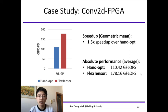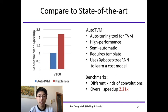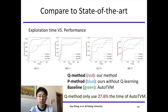We also compare to the state-of-the-art. We use AutoTVM as baseline, which requires users to write high-quality schedule templates and perform parameter tuning to find final schedules. It is semi-automatic, in fact, and relies on XGBoost to learn a cost model. We compare to AutoTVM on several benchmarks. The overall speedup is 2.21 times over AutoTVM. What's more, we also compare the exploration time cost. Here we show the exploration time of three methods. The red one is our method with Q-learning, which is called Q-method. The blue one is our method without Q-learning for contrast. It is called P-method. And the green one is AutoTVM, which is our baseline. We can see AutoTVM is faster than P-method, and Q-method is faster than both P-method and AutoTVM. Actually, in our experiments, Q-method requires less than 30% of the time AutoTVM to achieve similar performance.